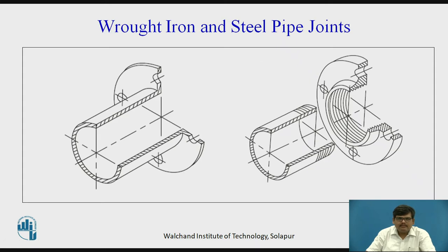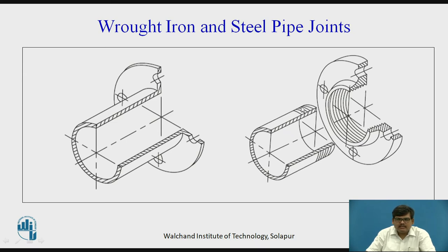Then we have wrought iron and steel pipe joints, where there are two types of joints. In one type, the flange is an integral part of the pipe — the end of the pipe is shaped into a flange. Alternatively, the flange and pipe are joined together by threads — internal threads are cut on the flange and external threads on the pipe. Similarly, another pair is made and the two are connected with the help of a nut and bolt arrangement.